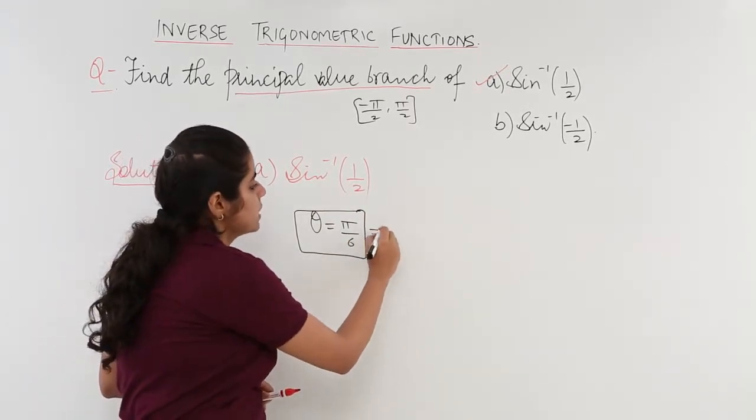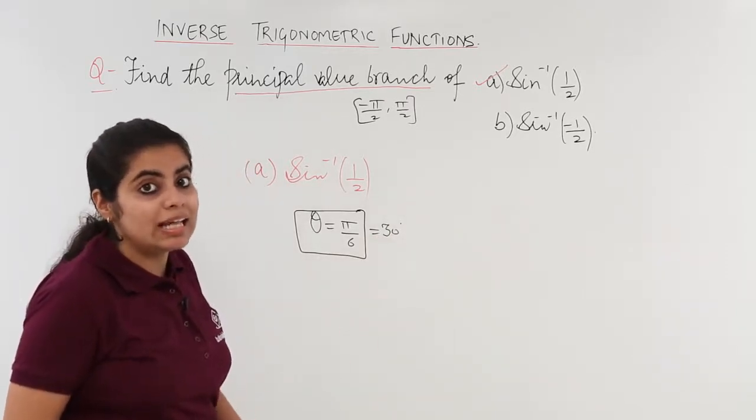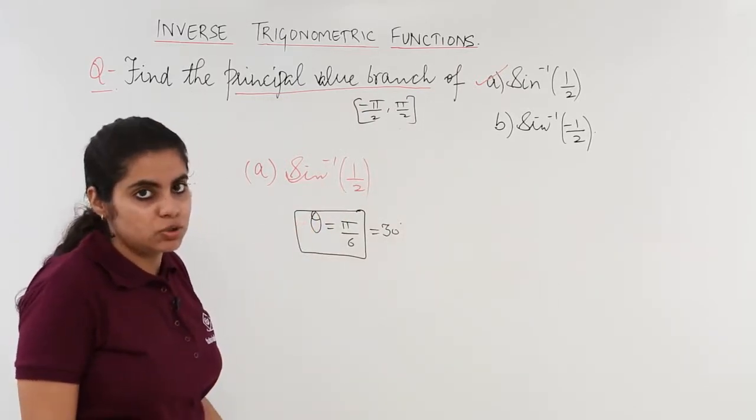So, my theta or my angle is nothing but pi by 6 and that is my very simple answer. Because pi by 6 is what? Pi by 6 is 30 degrees. Sine 30 is 1 by 2 and that 30 degrees or pi by 6 lies in the interval of minus pi by 2 to pi by 2.